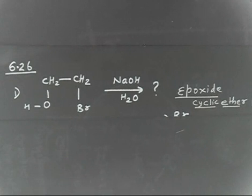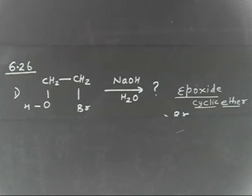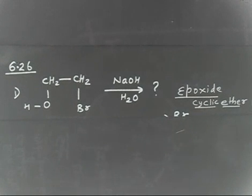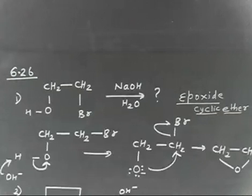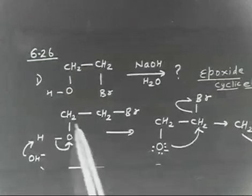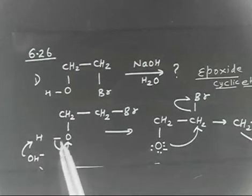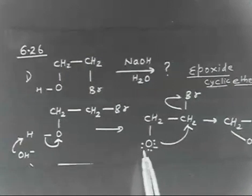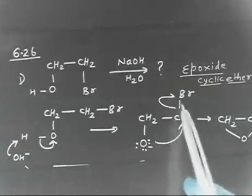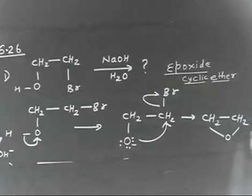The first step is to take H⁺, then the nucleophile attacks and Br leaves. Let us see the solution. We have CH2OH and CH2Br. In the first step, OH⁻ takes H⁺ from the hydroxyl group, giving O⁻. In the next step, this O⁻ attacks the carbon bearing Br, and Br leaves, giving the epoxide — a three-membered cyclic ether.